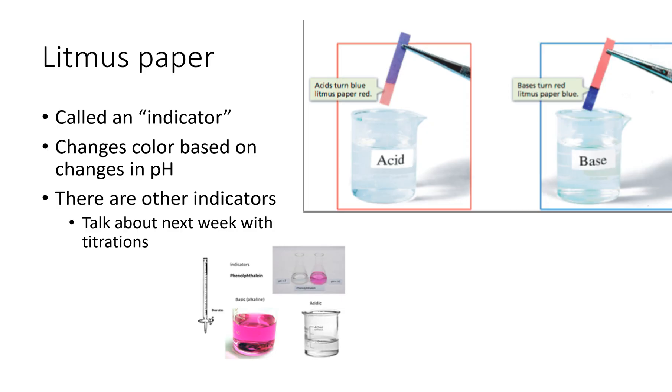Litmus paper. What is litmus paper? Why do I keep talking about it? So litmus paper is called an indicator. There are lots of different types of indicators in the world. This one is just super simple, but all indicators are going to change color based on pH. As you can see here in our picture is a piece of litmus paper. When it goes into the acid, it turns it red. When the litmus paper goes into the base, it turns blue.